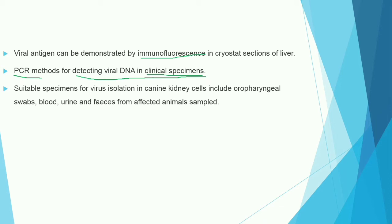Suitable specimens for virus isolation include canine kidney cells if the animal has died, or pharyngeal swab, blood, urine, and feces from affected living animals.